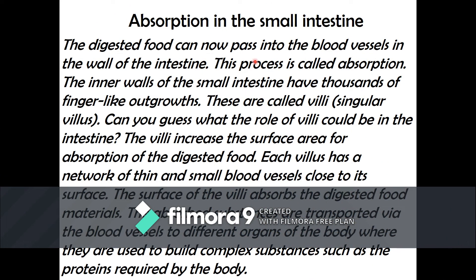Next, absorption in the small intestine. The digested food can now pass into the blood vessels in the wall of the intestine. This process is called absorption. The inner walls of the small intestine have thousands of finger-like outgrowths called villi. Villi increase the surface area for absorption of the digested food.